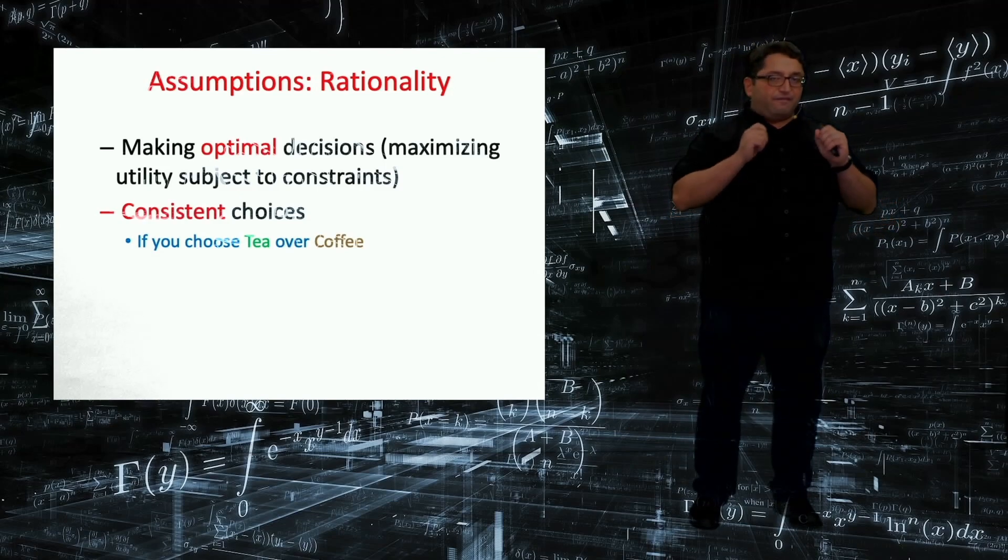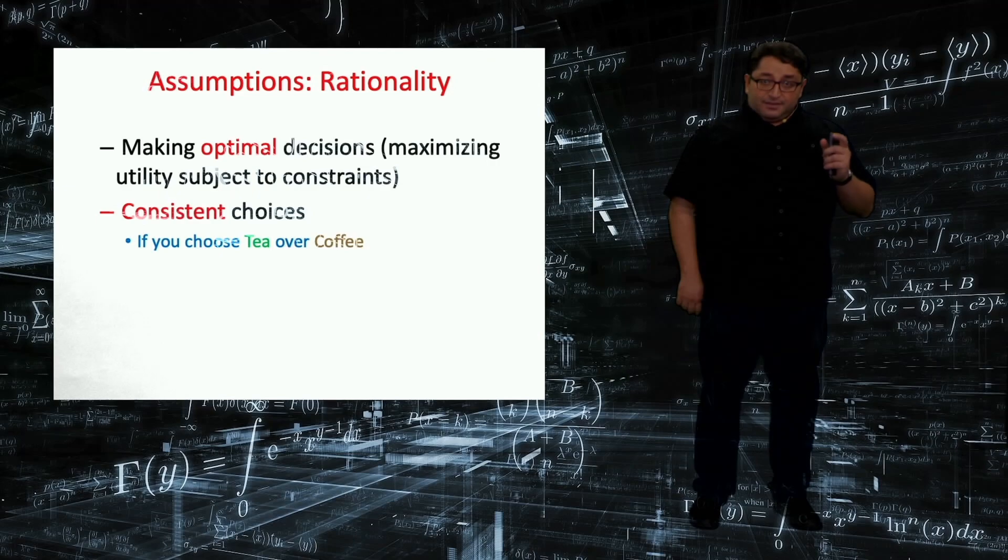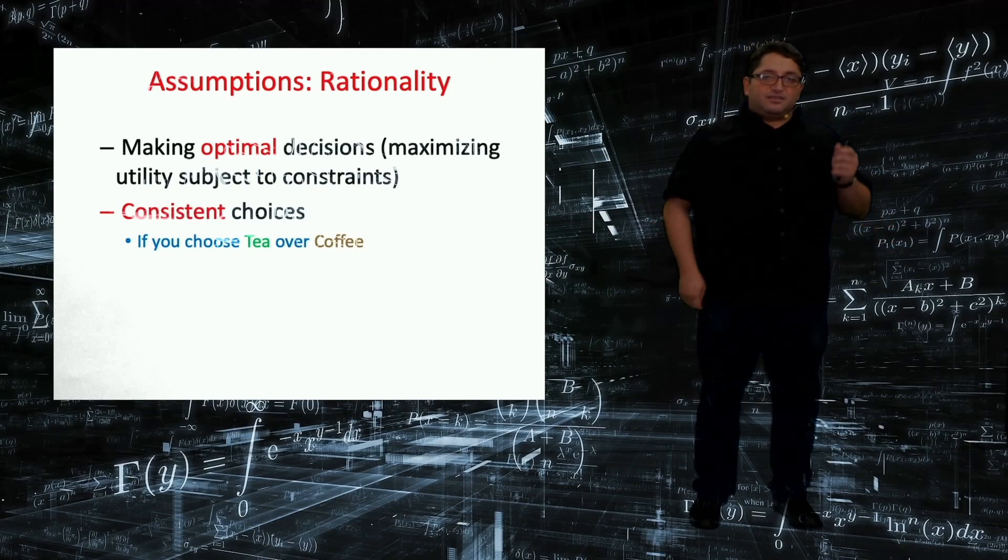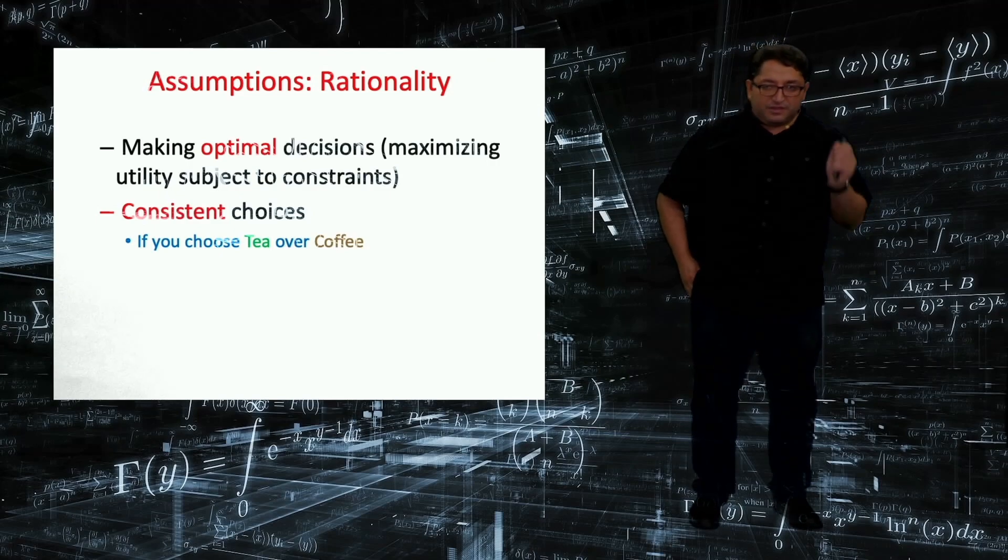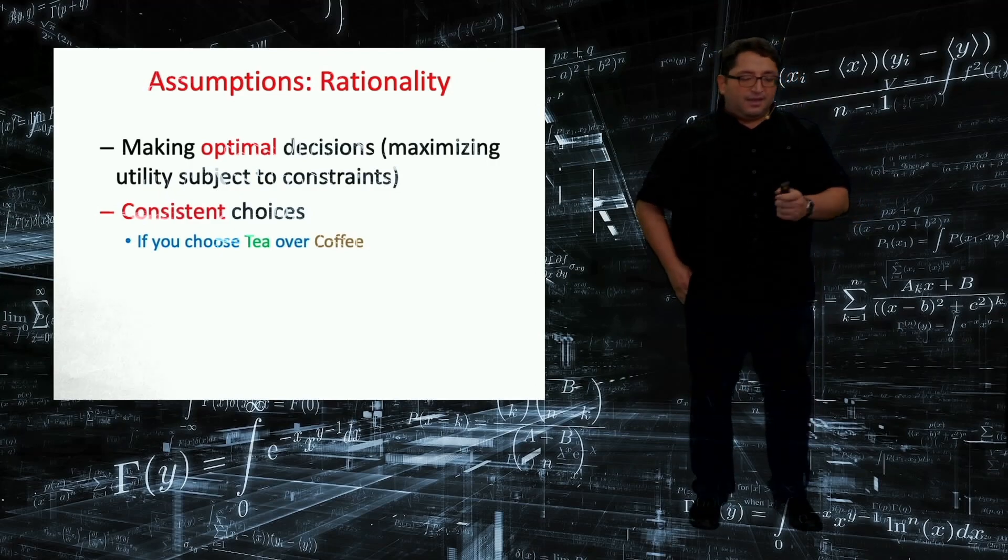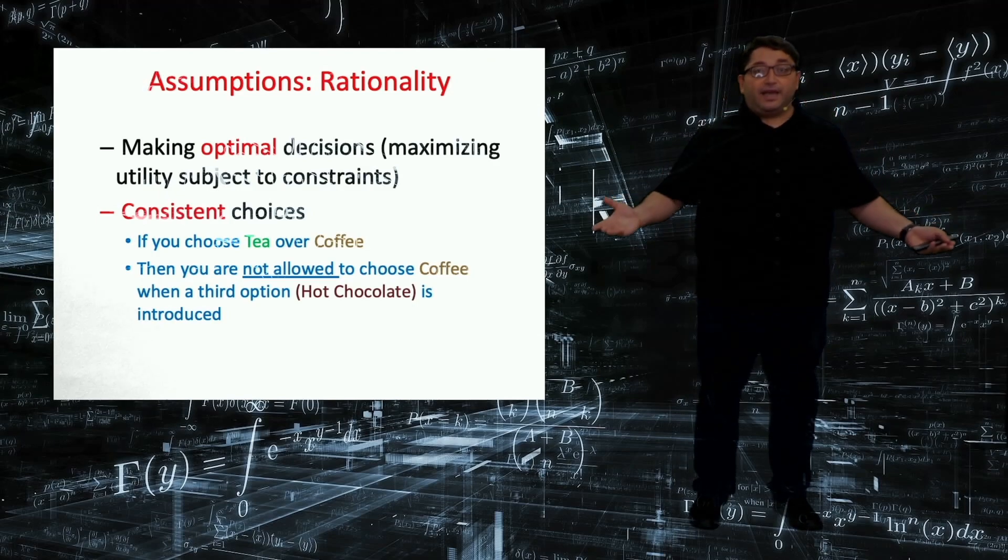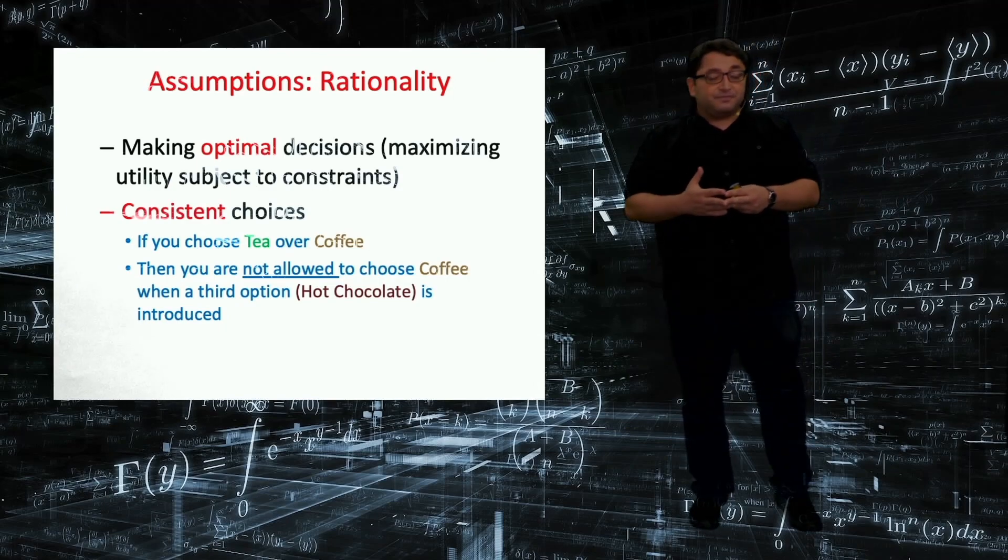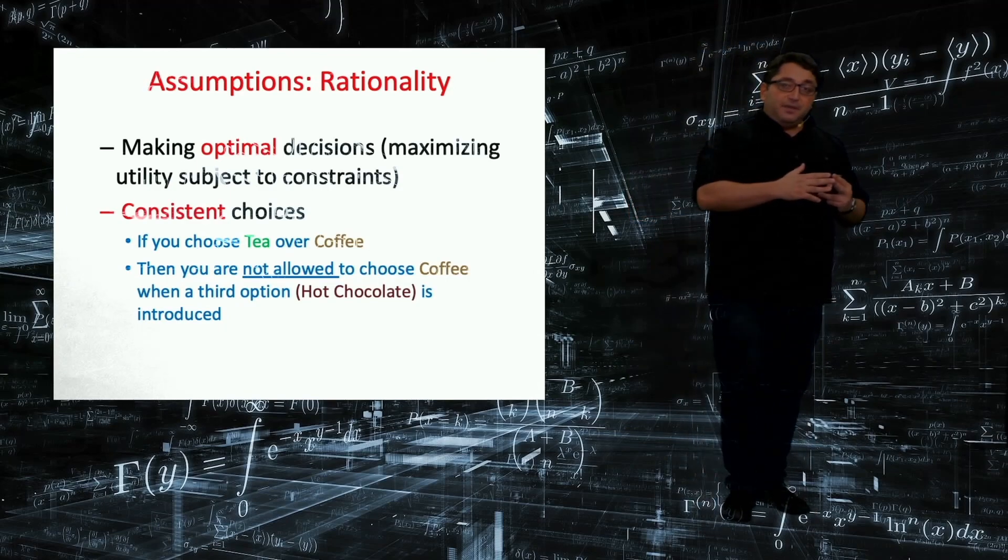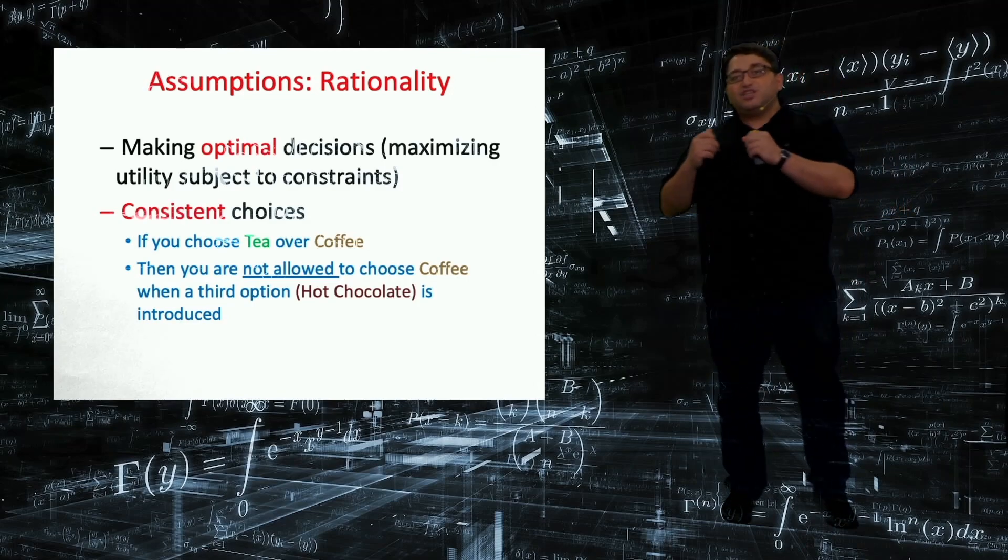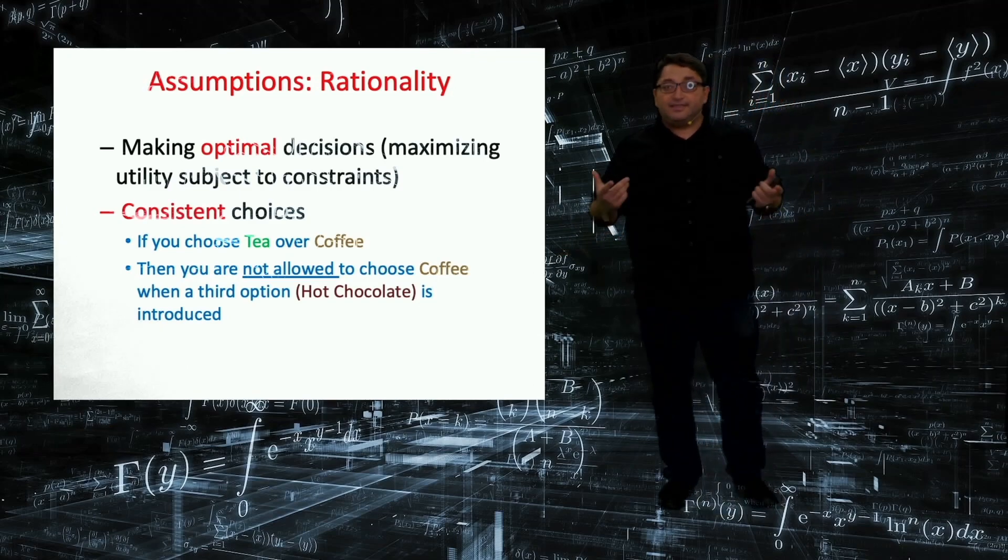Let me illustrate this via a very simple example. Suppose I am offered tea or coffee, and my action is order tea. So I am revealing my preference, which is I prefer tea over coffee. And next, I am presented with another problem, which is adding a third option, say, hot chocolate. What would you like to get among tea, coffee, and hot chocolate?